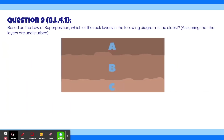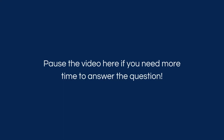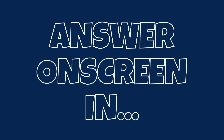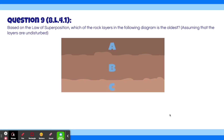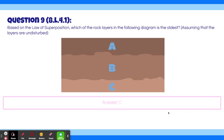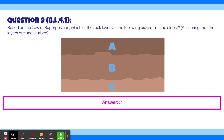Question 9. Based on the law of superposition, which of the rock layers in the following diagram is the oldest, assuming that the layers are undisturbed? The answer is C. By the law of superposition, C is the oldest because A and B are above it, meaning A and B must have been deposited after C.